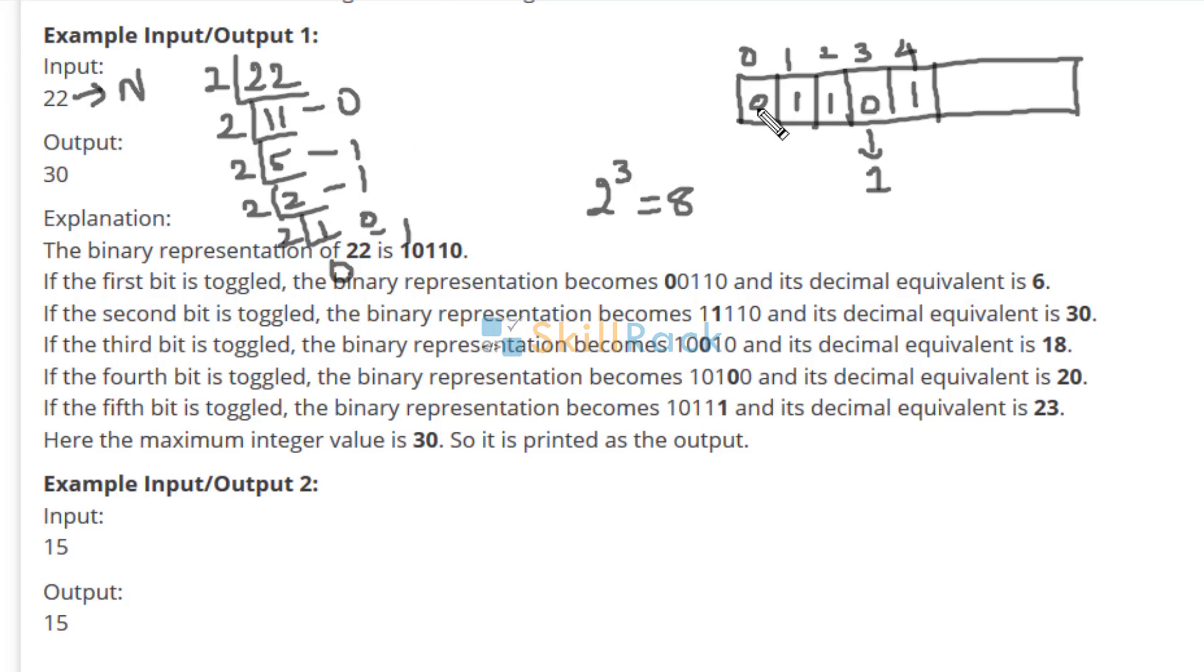So first represent it in binary array. Then from the end, you come and search for 0, wherever 0 has occurred, 2 power that index value, because 0 is at index 3, so 2 power 3 equals 8, add that to n.